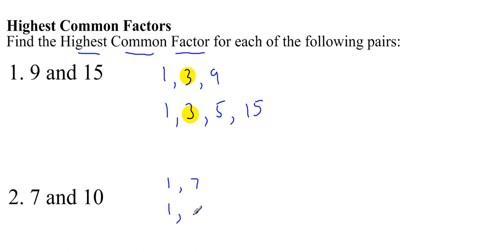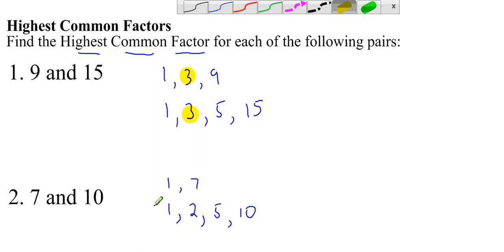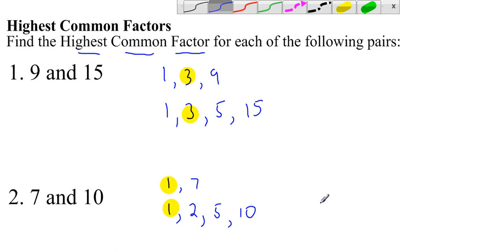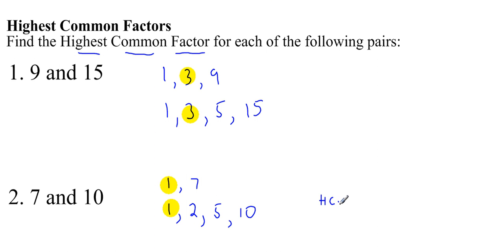1 goes into 10 exactly. 2, 5, and 10 itself. You can see straight away that there is only one common factor, and it's 1. So that is also going to be the highest common factor. The highest common factor of 7 and 10 is 1. And to also write the previous one: the highest common factor of 9 and 15 is 3.